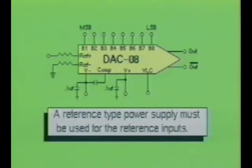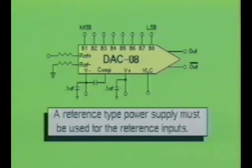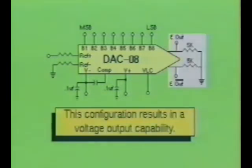To this point, we have only considered the DAC-08 device as a current source at the outputs. However, there are applications when a voltage output operation is required, and this can also be provided with the DAC-08 device. By simply placing resistors at the outputs of the digital-to-analog converter device and using the voltage drops across these resistors, you can create an output voltage potential.